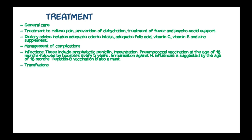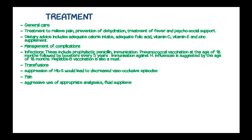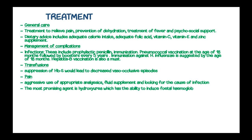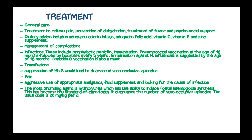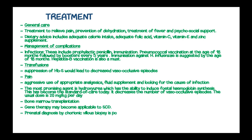Blood transfusions are given in cases of anemia, which may also decrease vaso-occlusive episodes by reducing the proportion of HbS. Pain is humanized using aggressive appropriate analgesics, and fluid supplementation is provided while looking for the cause of infection. The most promising agent used in sickle cell disease is hydroxyurea, which has the ability to induce fetal hemoglobin synthesis. Bone marrow transplantation and gene therapy may also be applicable. Prenatally, sickle cell disease is diagnosed using chorionic villus biopsy.